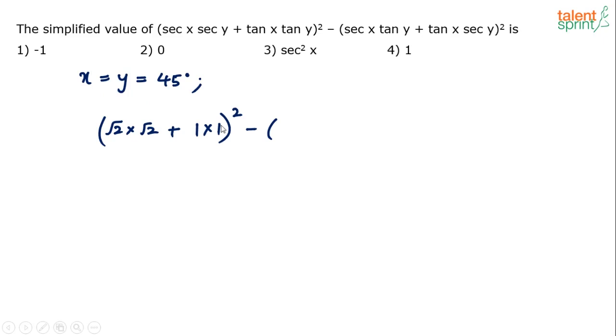Take the other thing: sec x into tan y. So sec x: sec 45 is √2 into tan 45 is 1, plus tan 45 is 1 into sec 45 is √2, whole squared.